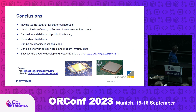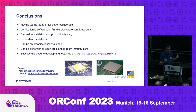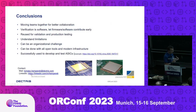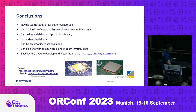My conclusions are: moving teams together for better collaboration works very well if you can execute it. Verification is software, so let the software and firmware people contribute to ASIC verification. It's really hard to find verification engineers — this approach can make it easier, and those contributors also have fun with something new. Reuse the verification, validation, and production testing code. All this code is sometimes developed three times in isolation — try to make it into one unified codebase. It's important to understand the limitations of this method.